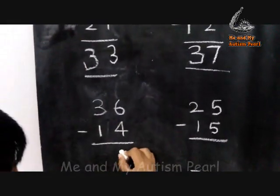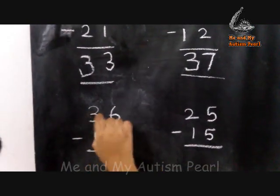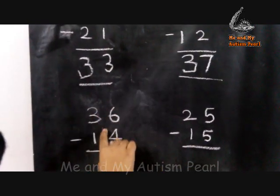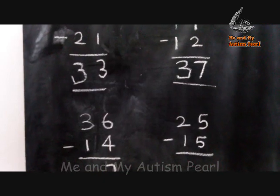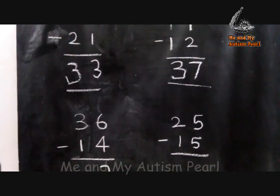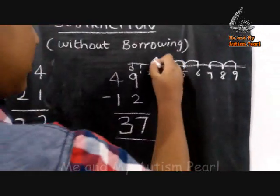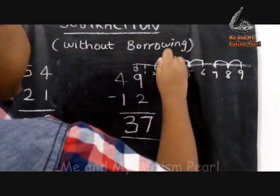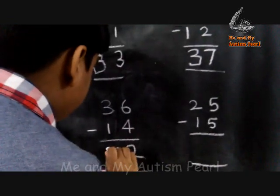Six minus four is equal to two. Three minus one is equal to two.